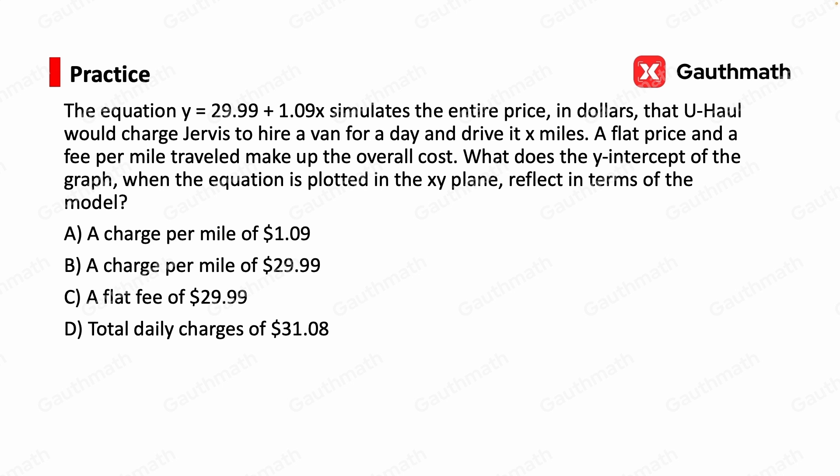The question is asking the y-intercept on the graph. So a sketch will be very helpful here. We only need a quadrant 1 because x is the miles driven and driving negative miles doesn't make much sense here.